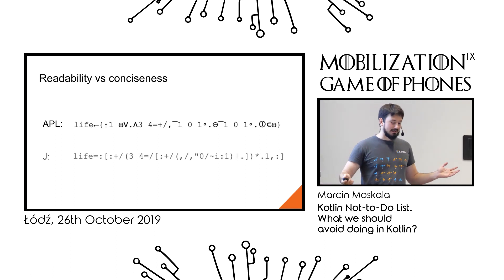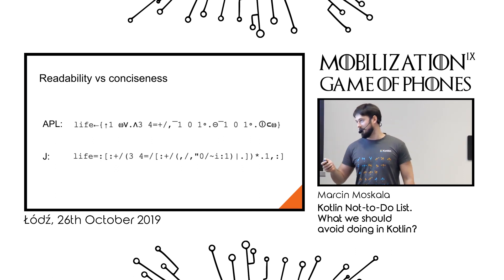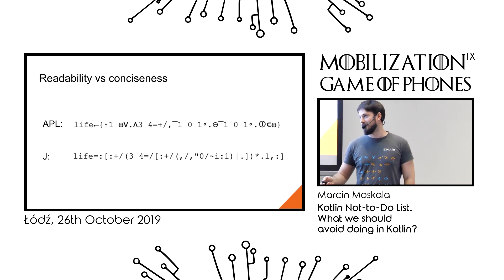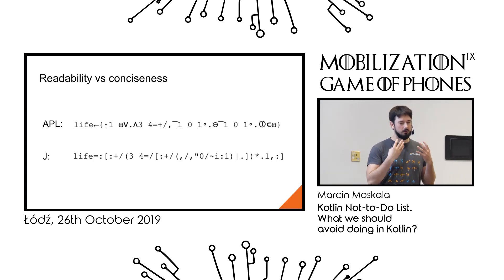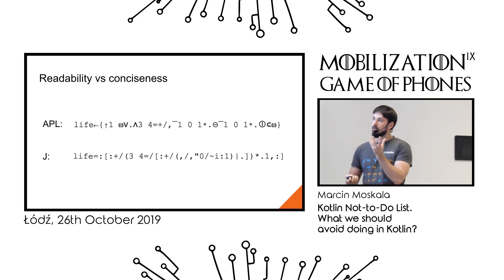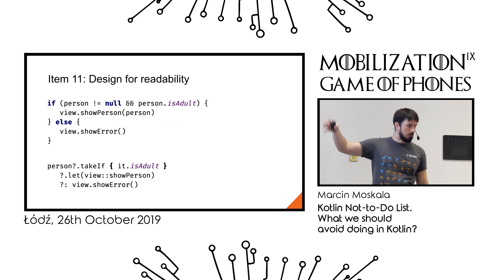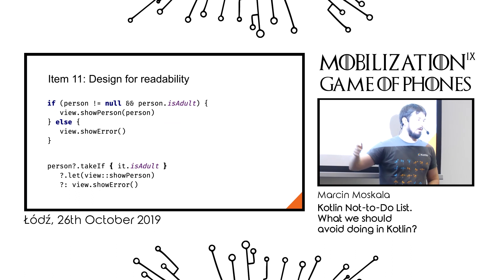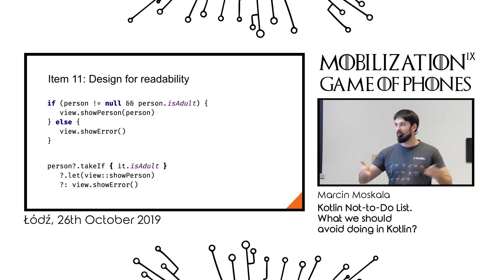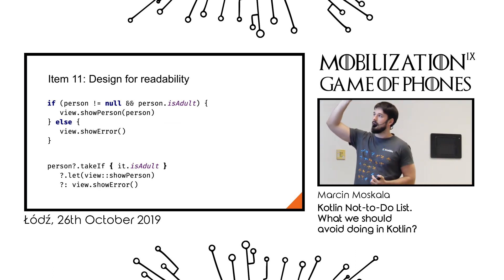Languages like J are champions in programming golf contests. If that's what you want, those languages are for you. But if you like readable code, I suggest Kotlin — and we should keep Kotlin readable by keeping readability as our primary concern. I asked quite a few developers which implementation they prefer between two code snippets, and I was surprised how many experienced developers preferred the more cryptic second one.